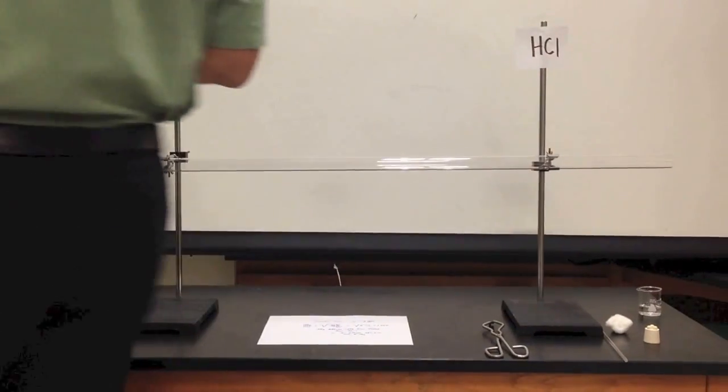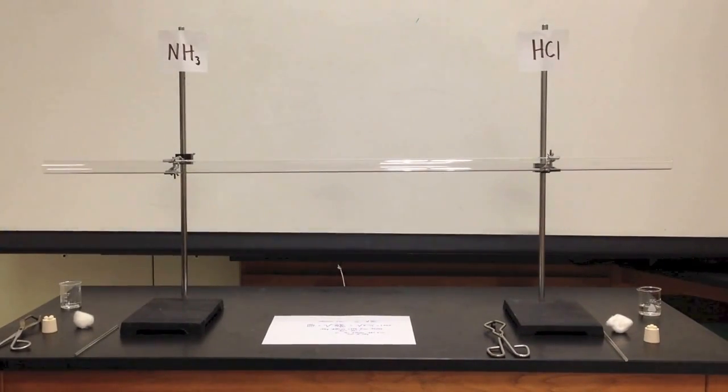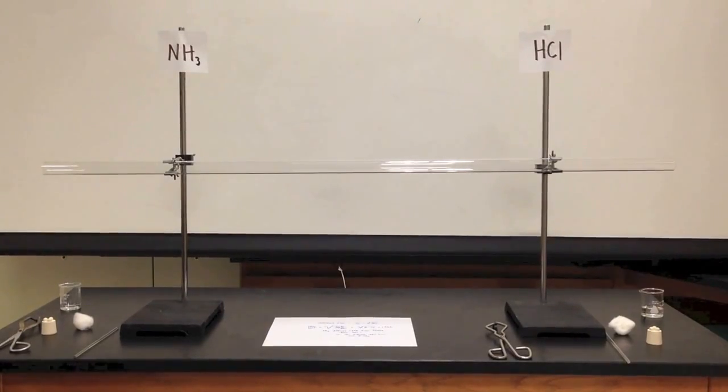I'm going to start with ammonia and hydrochloric acid, and I'm going to start with the heavier gas. Hydrochloric acid is 36 grams per mole.